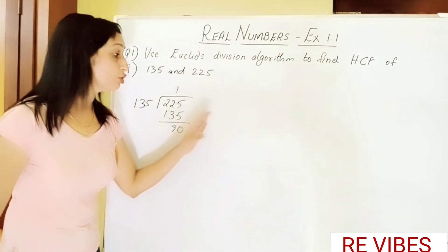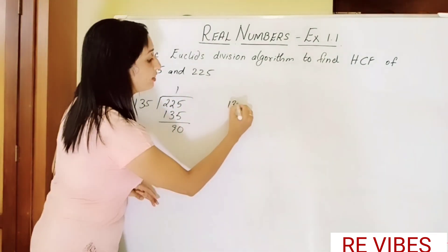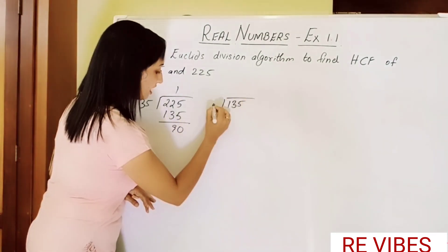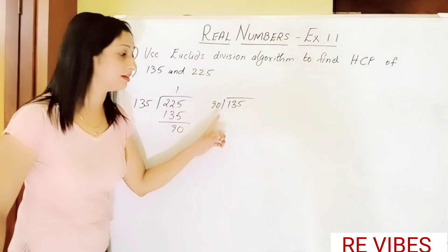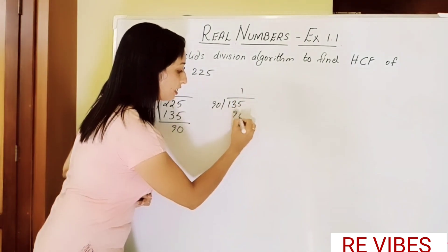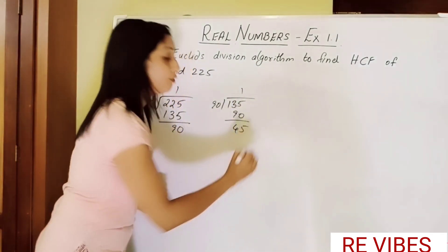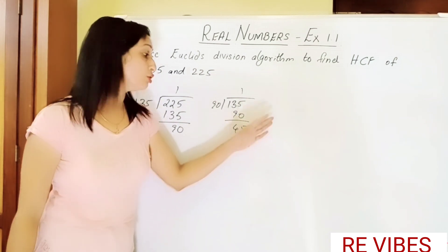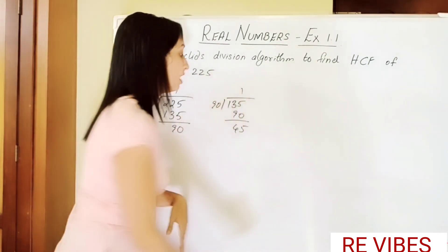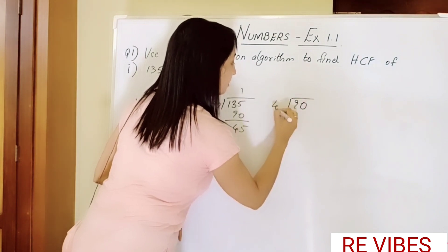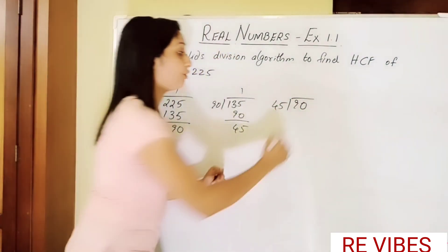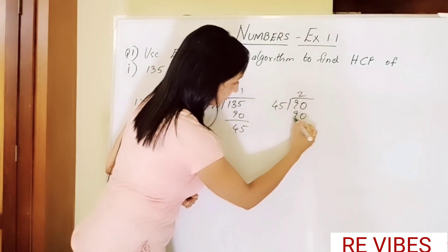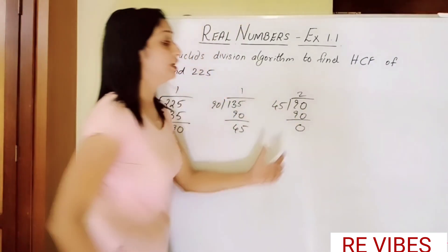So now 90 ones are 90, balance you get 45. Here also we haven't got our remainder zero, so we need to perform the division again. So here 90 divided by 45, 45 twos are 90, which is zero.